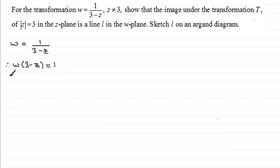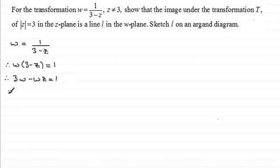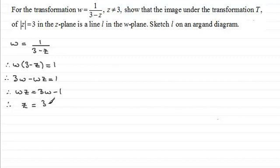Expanding the bracket we get 3W minus WZ equals 1. Adding WZ to both sides and subtracting 1 from both sides gives WZ equals 3W minus 1. Now dividing both sides by W we get Z equals 3W minus 1 all over W.